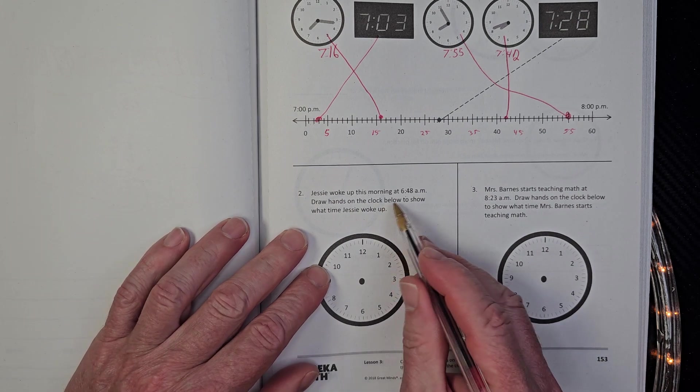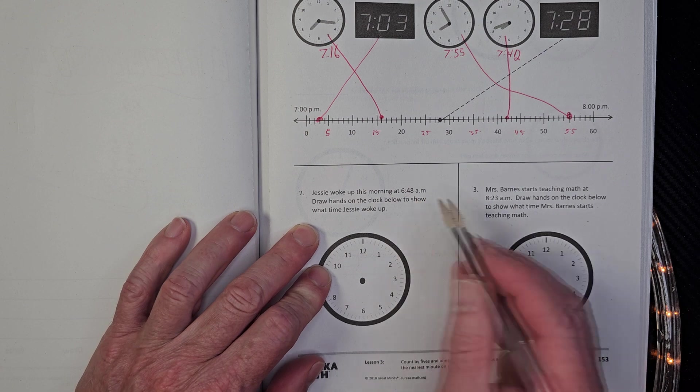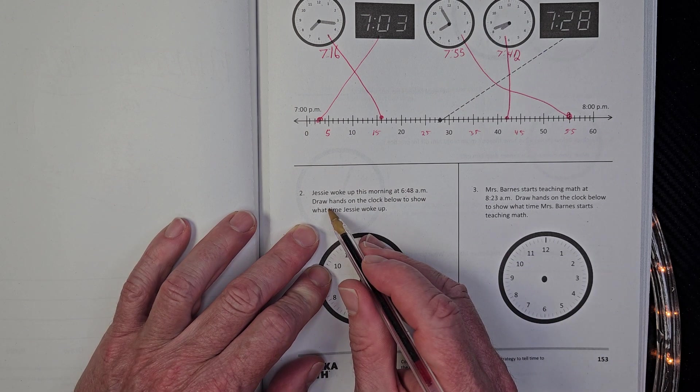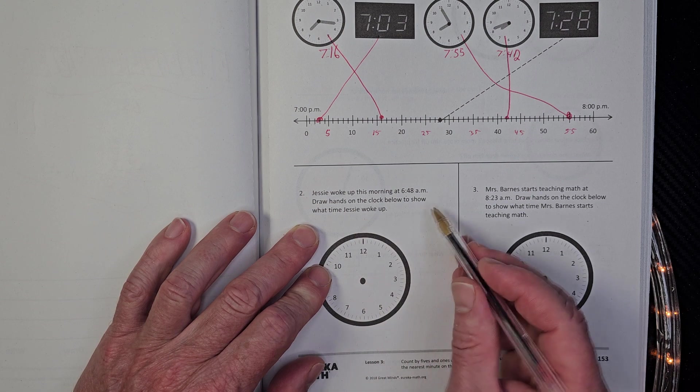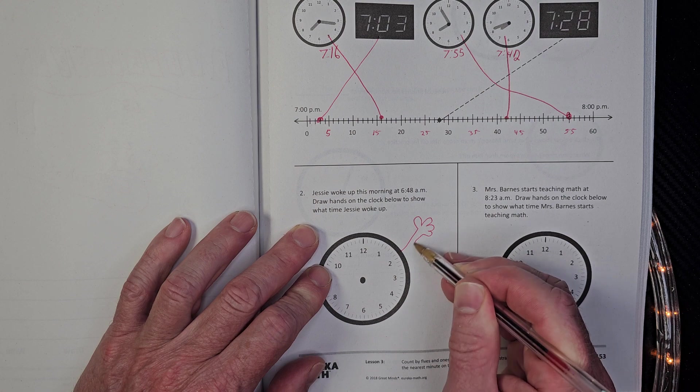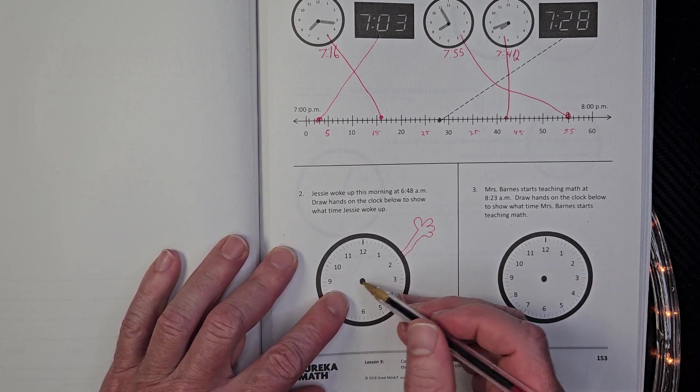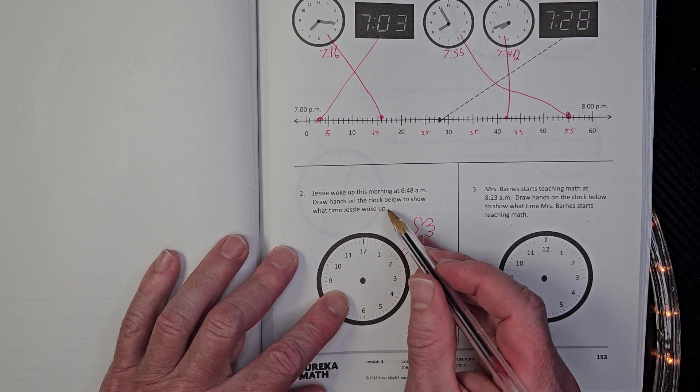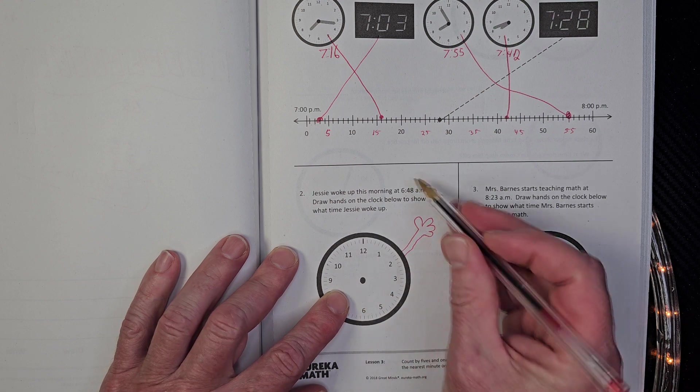Jesse woke up this morning at 6, 48 AM. All right. Draw hands on the clock below to show what time Jesse woke up. Please don't do this. Don't draw little hands on there. Hello. How are you doing? No, they're talking about the clock hands. Draw hands on the, I guess this would be right. Draw hands on the clock below to show what time she woke up. So it's six o'clock.